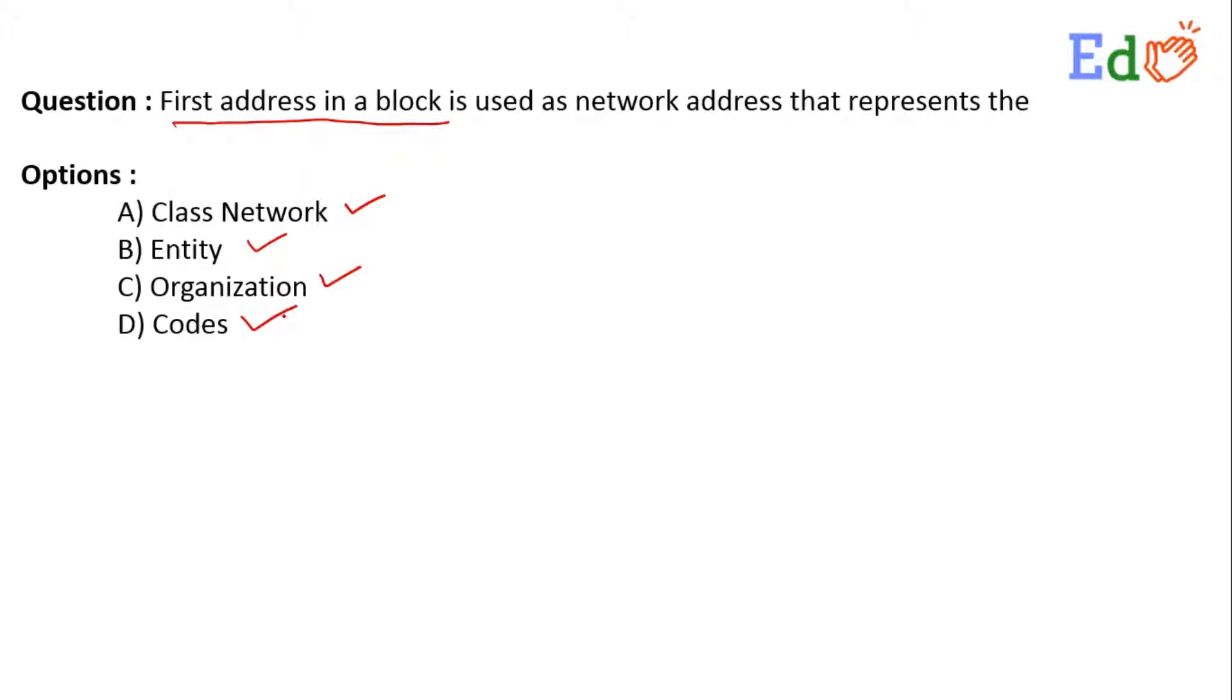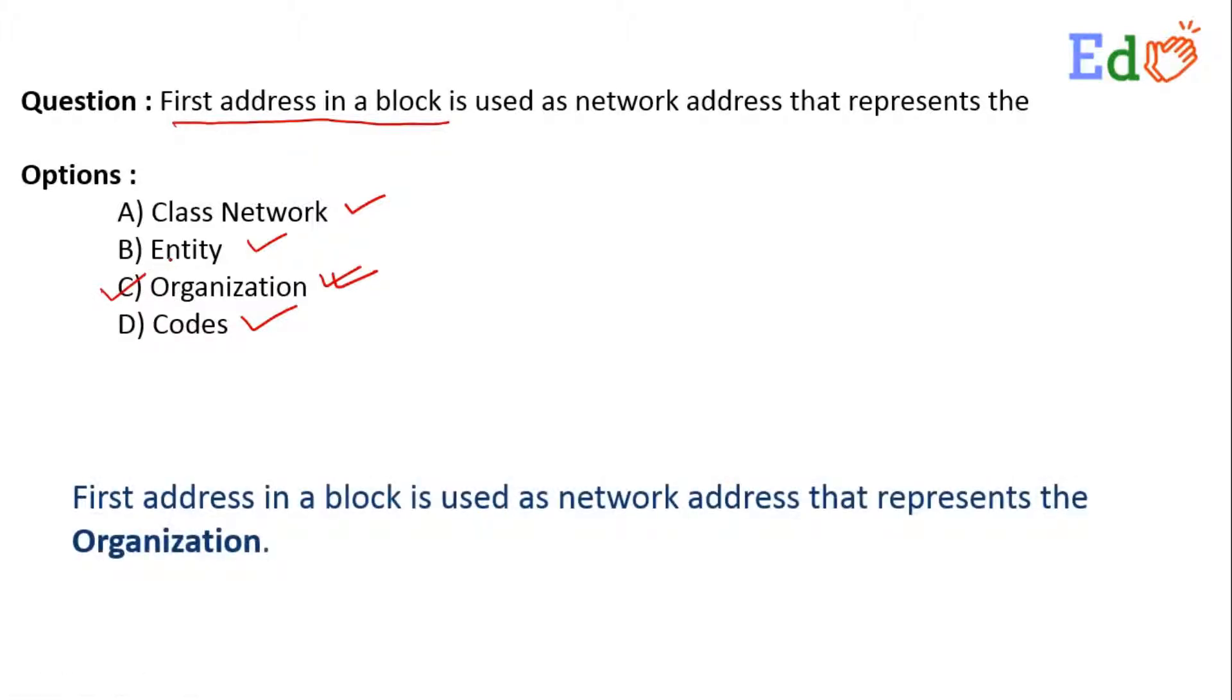So now what should be the answer? Here we will be going for option number C. We will be going for option C, that is Organization, because the first address in a block is used as a network address and that represents the organization. So here is the answer we are having, that is the organization.